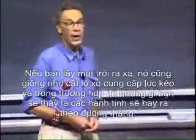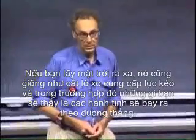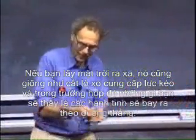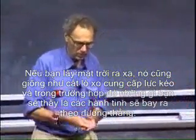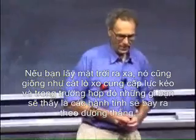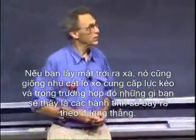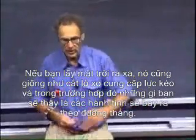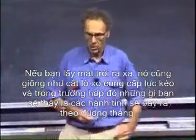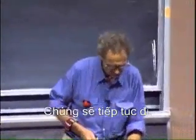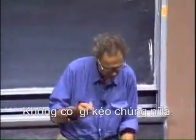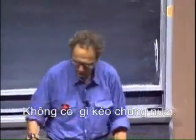If you took the sun away, it would be like cutting the string that provides the pull, and in that case what you would see is that the planets would just take off along a straight line. They would continue to go — they wouldn't have anything to pull on them anymore.